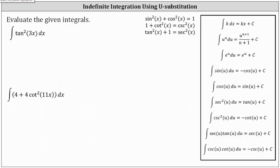We'll be using one of the Pythagorean identities shown here on the right, where since tan squared x plus one is equal to secant squared x, if we solve for tan squared x, we have tan squared x equals secant squared x minus one. This means we can substitute secant squared 3x minus one for tangent squared 3x, so the given integral is equal to the integral of secant squared 3x minus one dx.